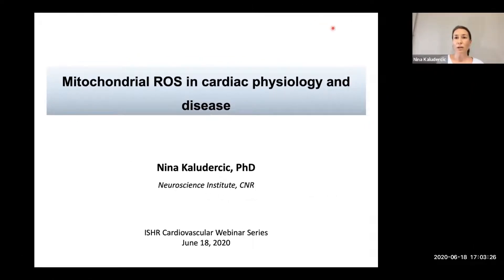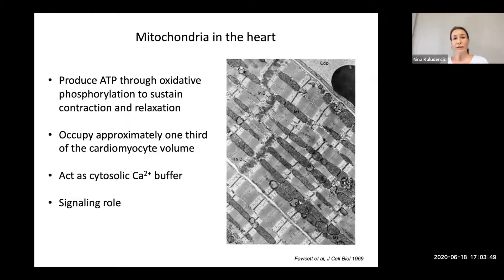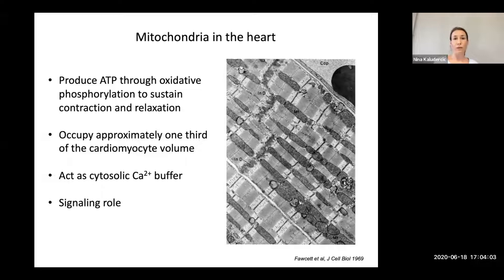Thank you for the nice introduction. I would like to tell you a little bit what our lab has been doing over these many years. We are very much focused on mitochondria and mitochondrial sources of reactive oxygen species, and how this impacts on cardiac physiology and disease. The heart is a very energy-demanding tissue, so the main role of mitochondria is to produce ATP through oxidative phosphorylation to sustain cardiac contraction and relaxation.